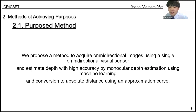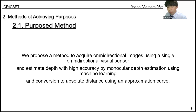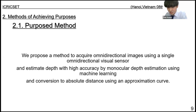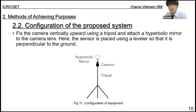We propose a method to acquire omnidirectional images using a single omnidirectional visual sensor, and estimate depth with high accuracy using monocular depth estimation with machine learning and conversion to absolute distance using an approximation curve. This constitutes the proposed method.